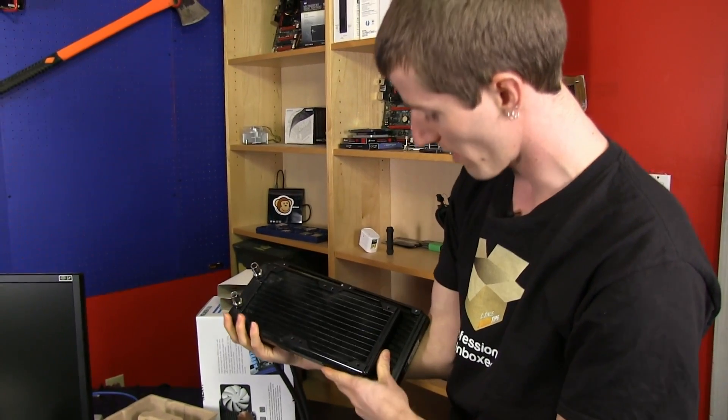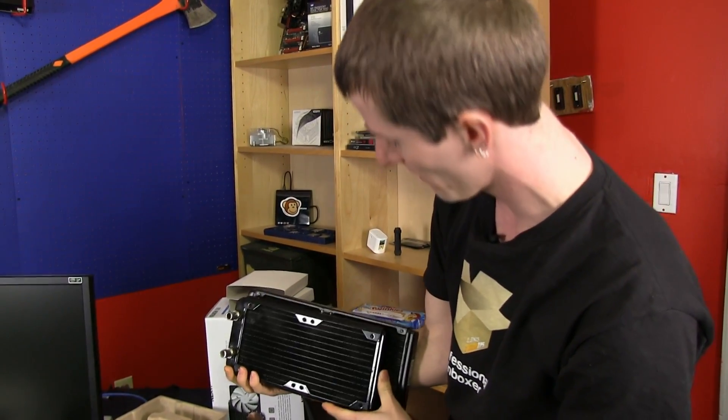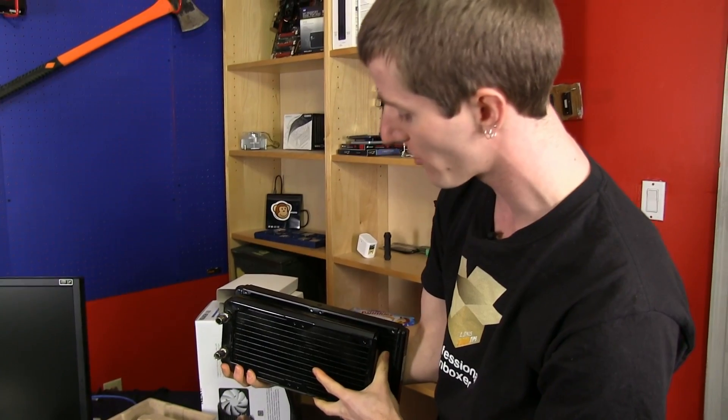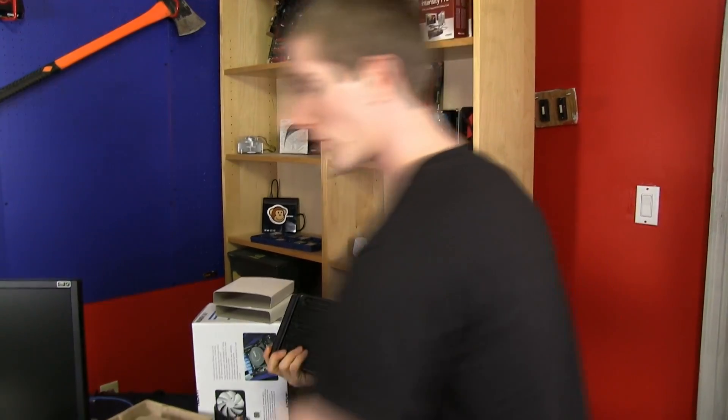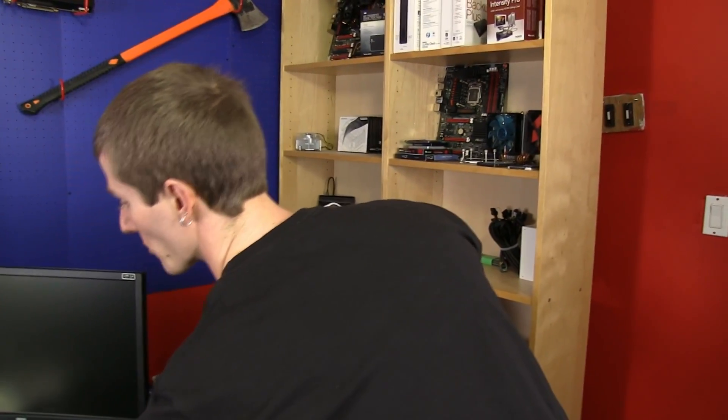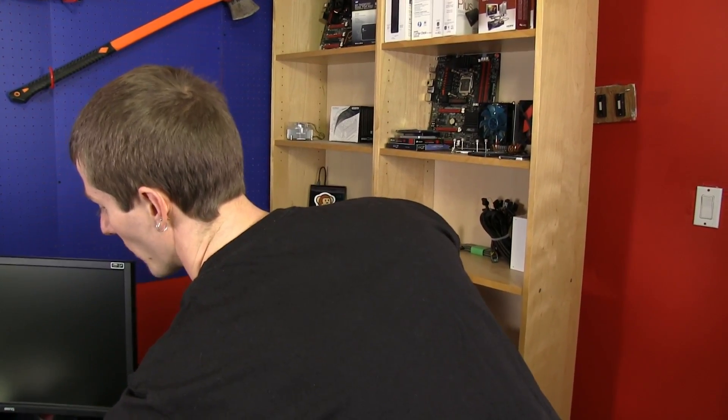Not only in terms of length, but also in terms of width and just sort of in every possible dimension. Now the one area where the Kraken X60 is not sort of bigger than normal is in terms of the thickness.